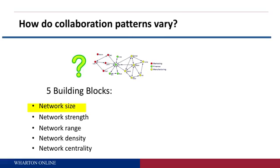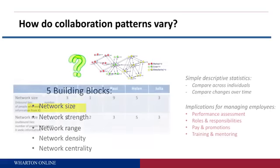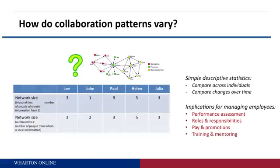If we look at network size, what we want to do is use this building block and compare across each of the individuals in the network — how big is their network? I'm not going to do every single individual; there are 15 of them. I'm just going to pick five people: Lee, John, Paul, Helen, and Julia.